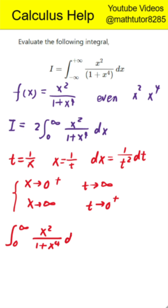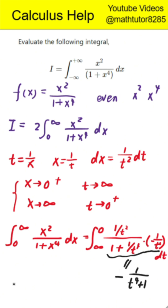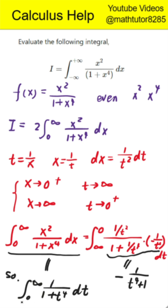Thus, the integral from 0 to infinity of x squared divided by 1 plus x to the fourth power dx becomes the integral from infinity to 0 of 1 over t squared divided by 1 plus 1 over t to the fourth power, multiplied by negative 1 over t squared dt. The fraction simplifies to negative 1 divided by t to the fourth power plus 1. So the integral equals the integral from 0 to infinity of 1 divided by 1 plus t to the fourth power dt.